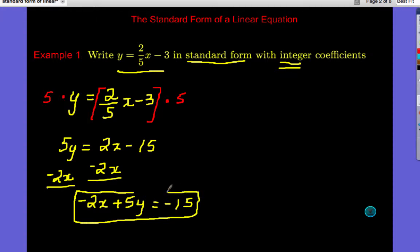And then I have negative two X plus five Y equals negative 15. So that is my Standard Form equation. So what this is really telling you is that any slope-intercept form can be also written in Standard Form. Notice negative two, five, and negative 15 are all integers.